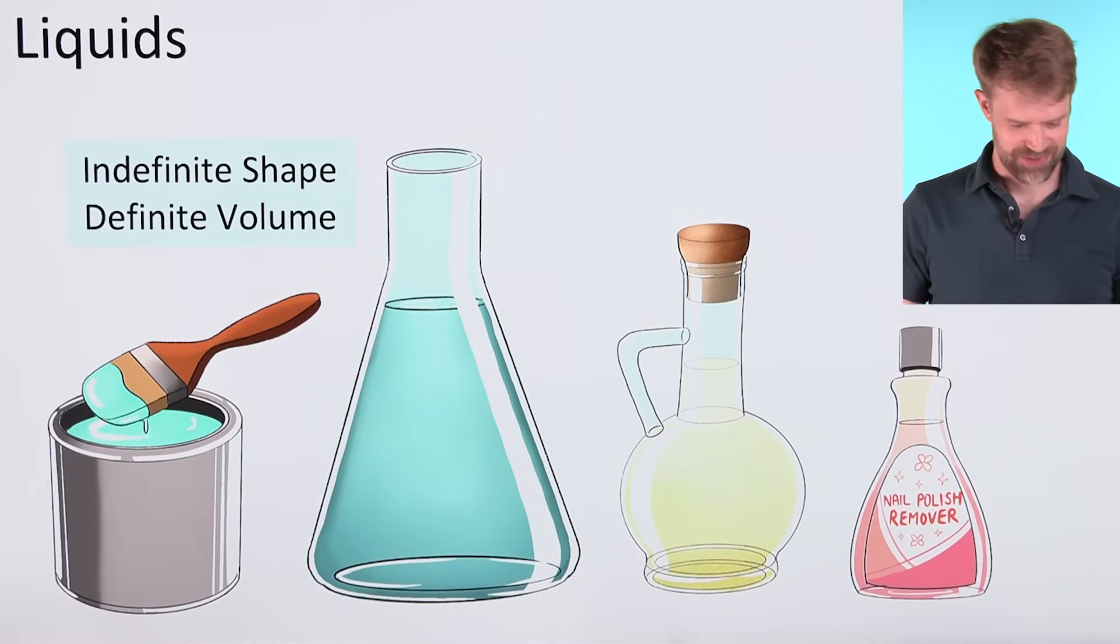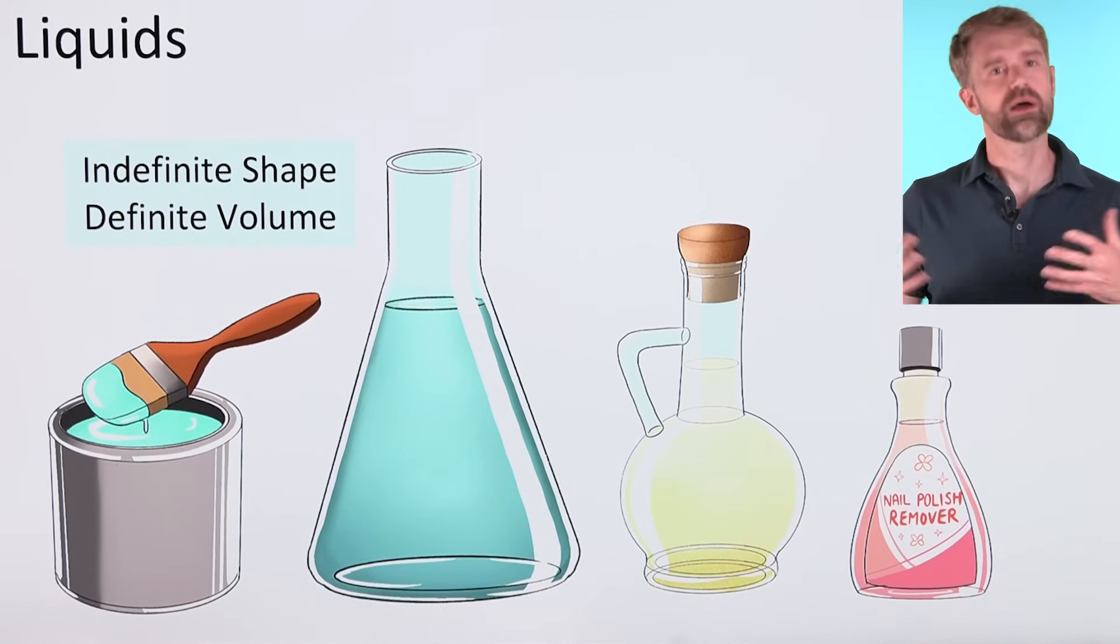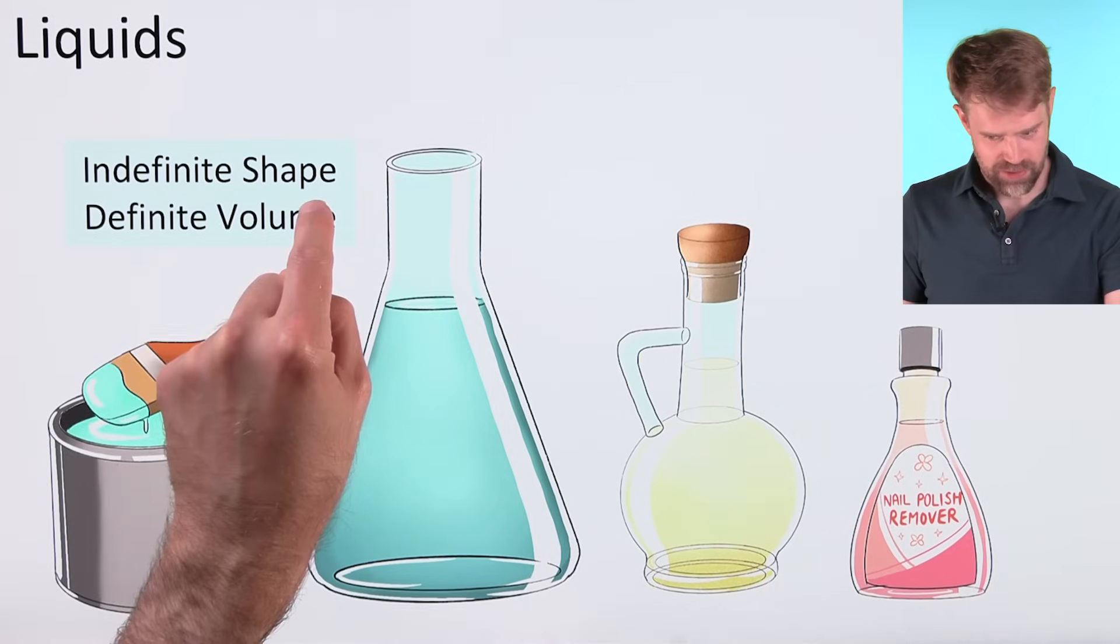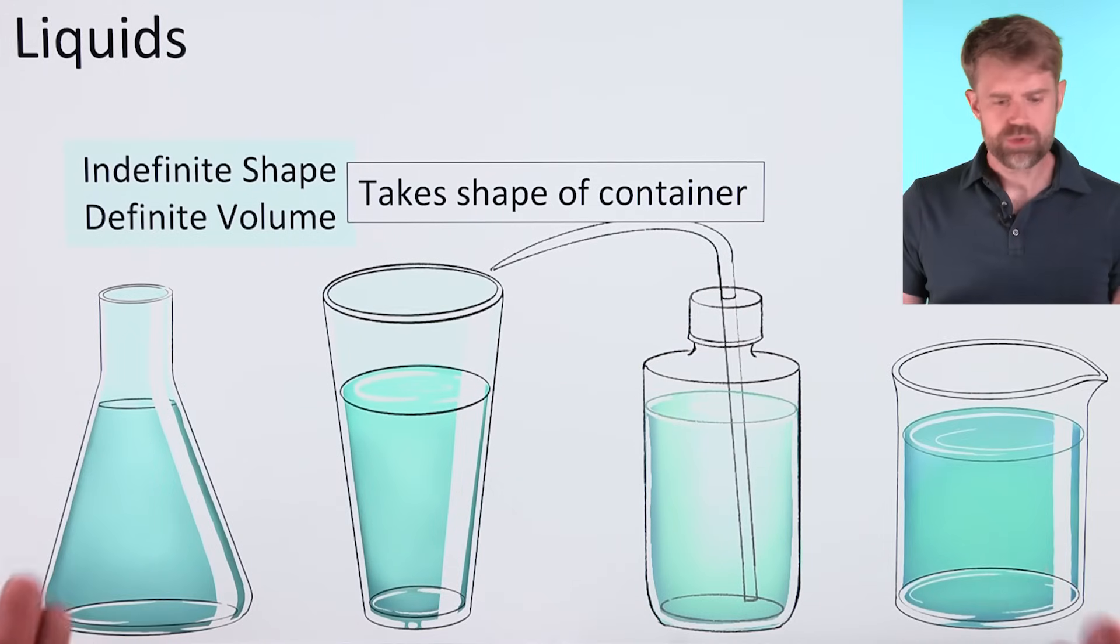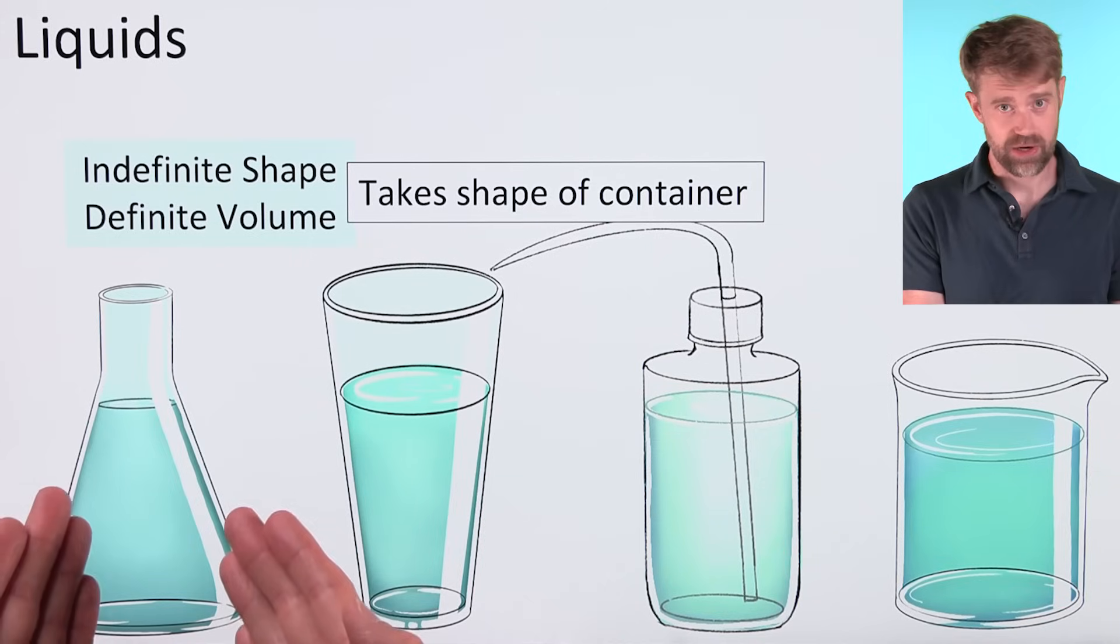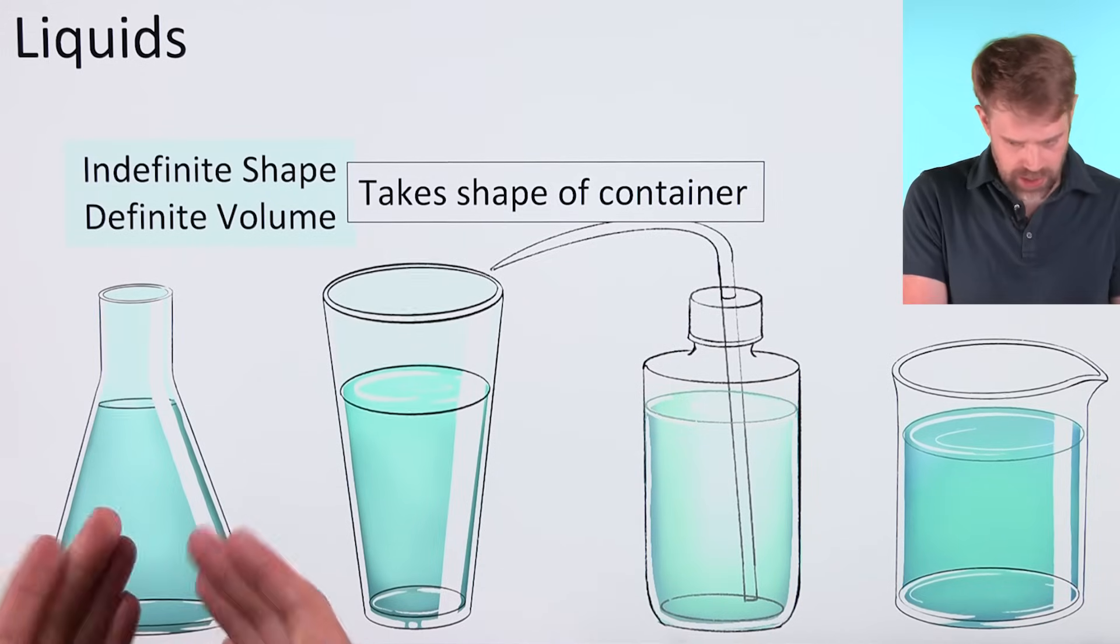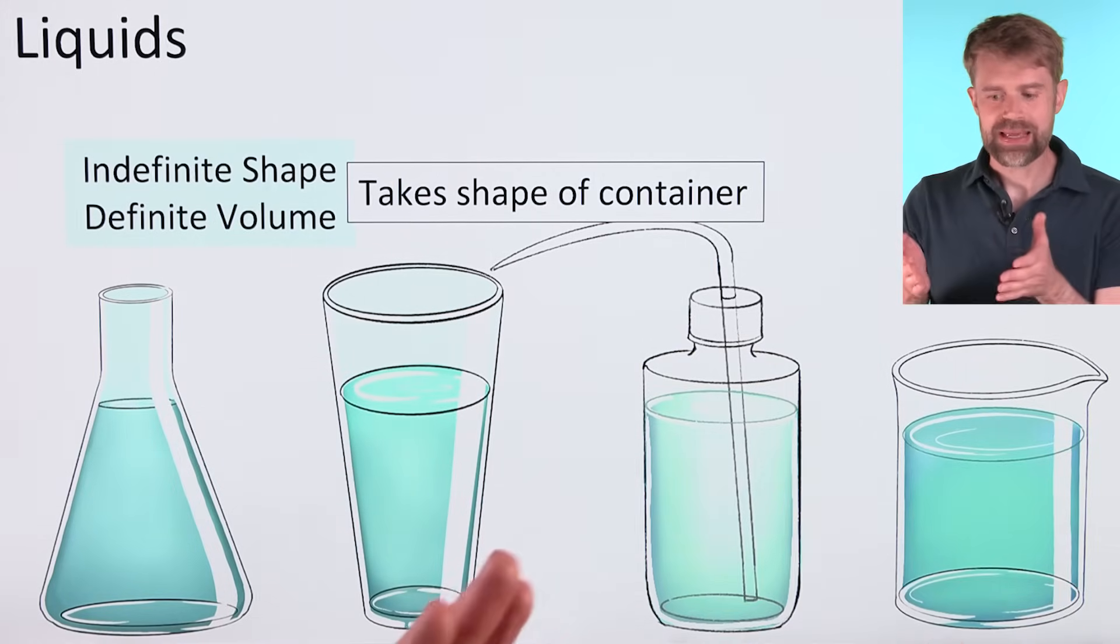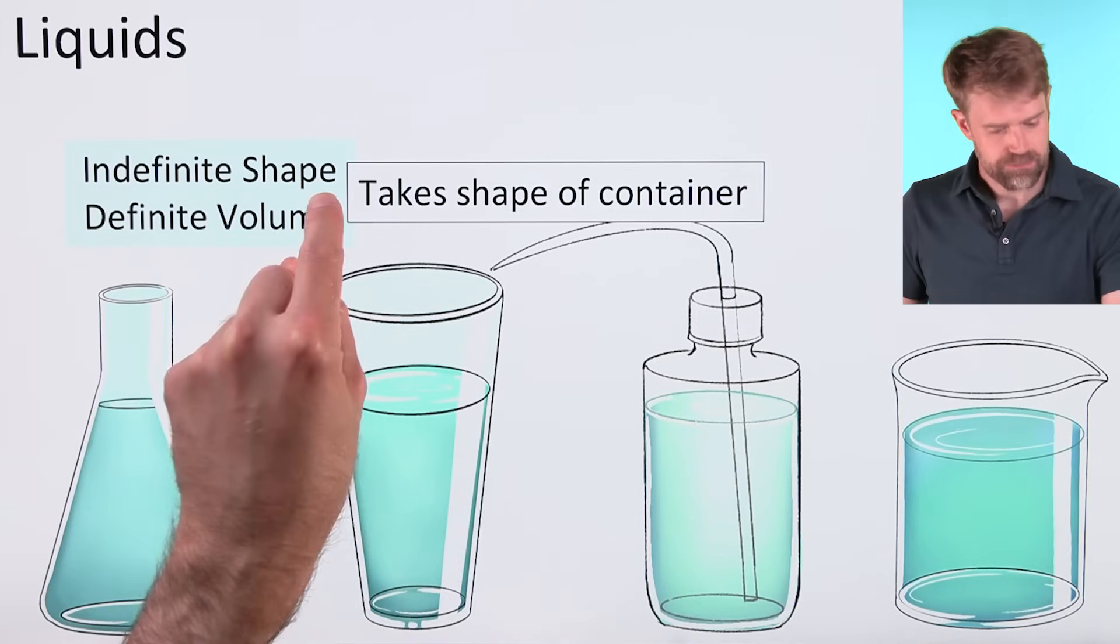We'll move on to liquids. What makes a liquid a liquid? Well, technically, a liquid has an indefinite shape, but a definite volume. Let's see what that means. A liquid flows freely. It takes the shape of its container like this flask here. The liquid has the shape of whatever container it's in. Every time we pour this liquid into a new container like a glass or a bottle or a beaker, it takes on a different shape. That's why we say that shape is indefinite.